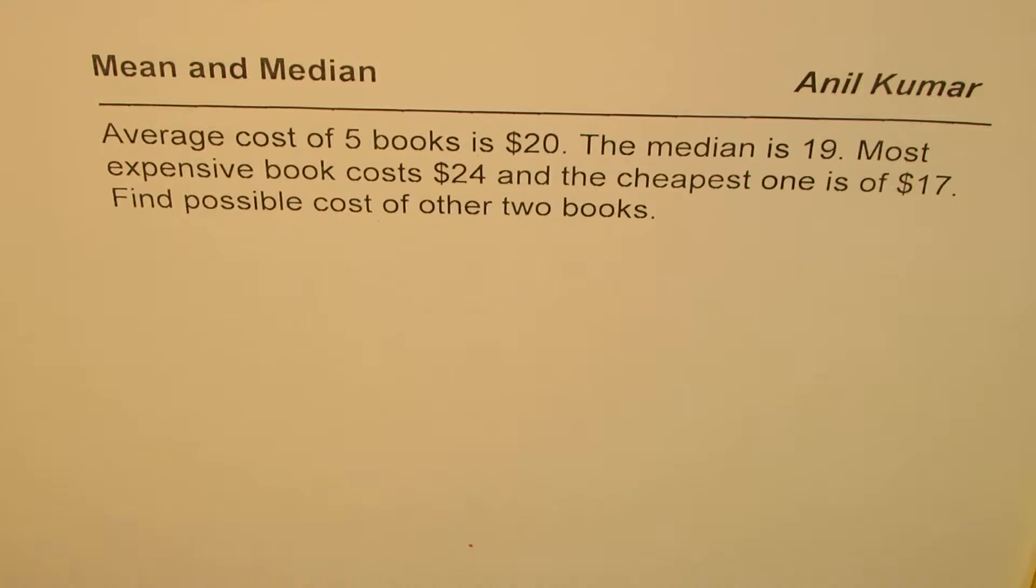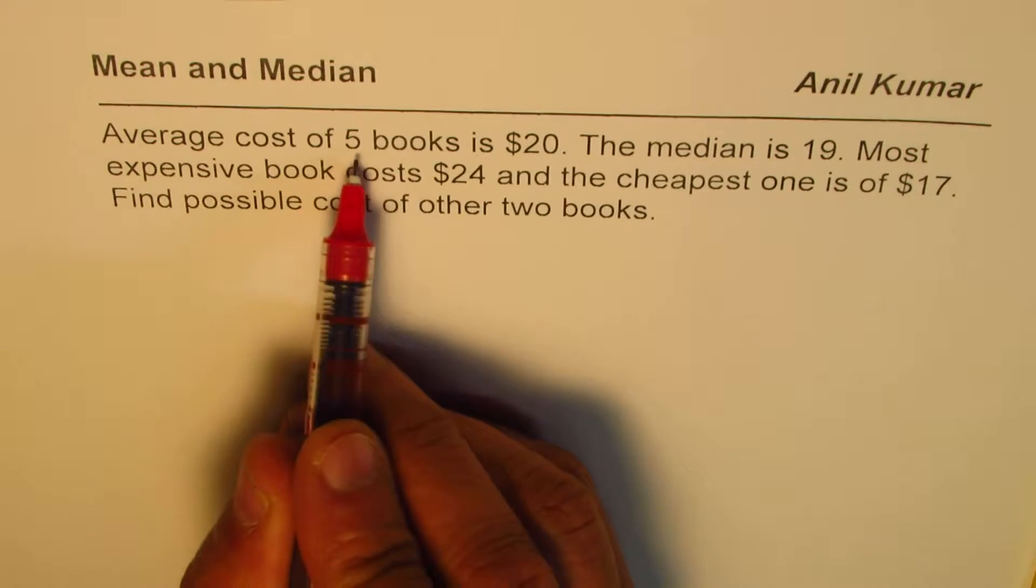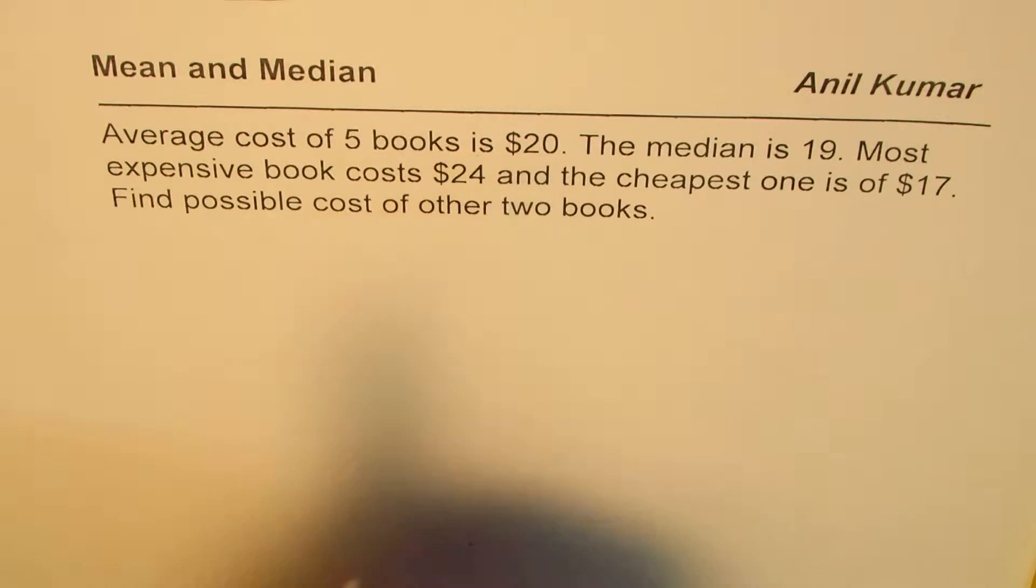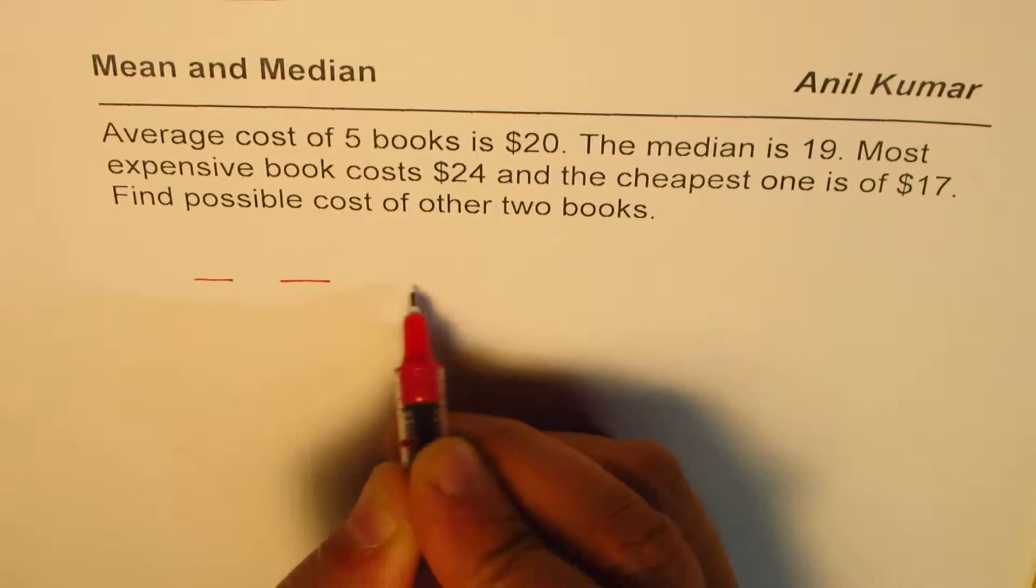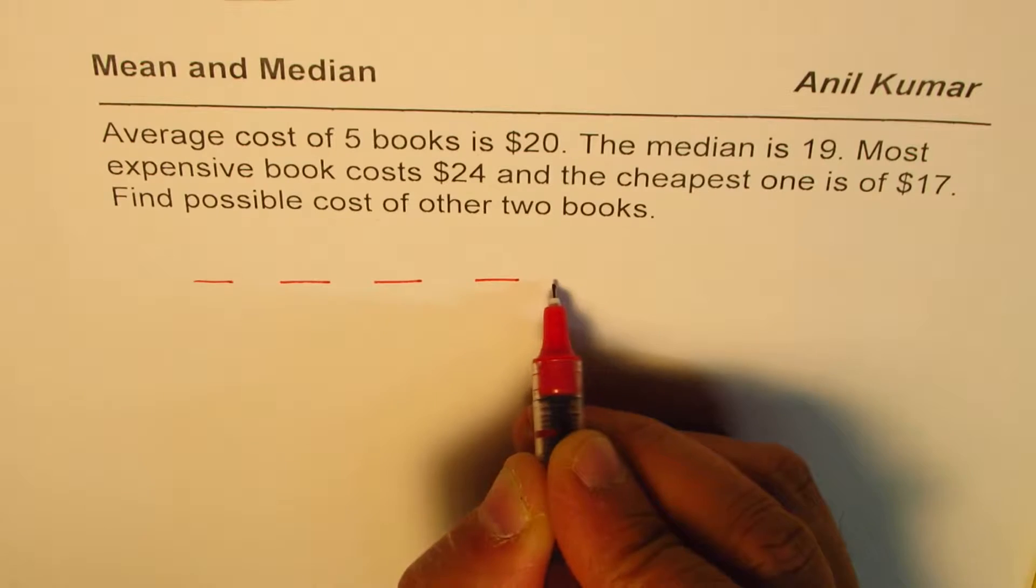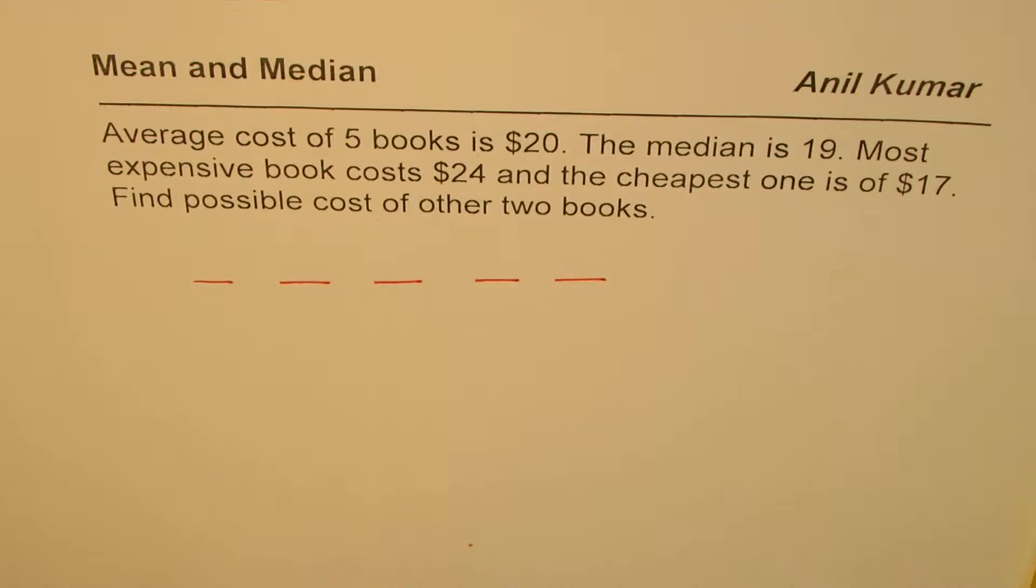That's the question for you. You can pause the video, understand the question, answer and then look into my suggestions. Let's read the question once again. Average cost of 5 books is $20. So we are working with 5 books. Let's say 1, 2, 3, 4, 5.